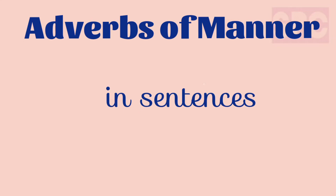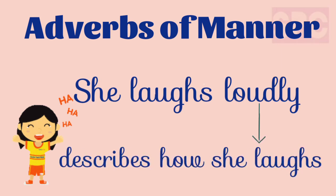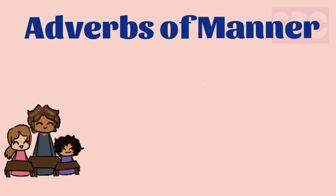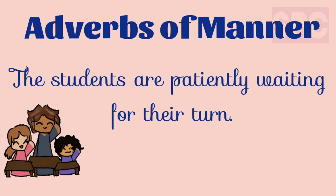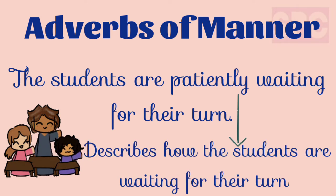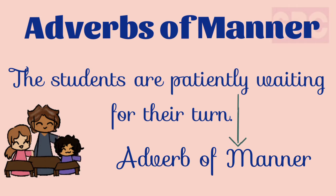Let's understand how to use adverbs of manner in sentences. First example: she laughs loudly. In this sentence, the adverb 'loudly' describes how she laughs. So, 'loudly' is the adverb of manner. Another example: the students are patiently waiting for their turn. In this sentence, the adverb 'patiently' describes how the students are waiting, so 'patiently' is the adverb of manner.